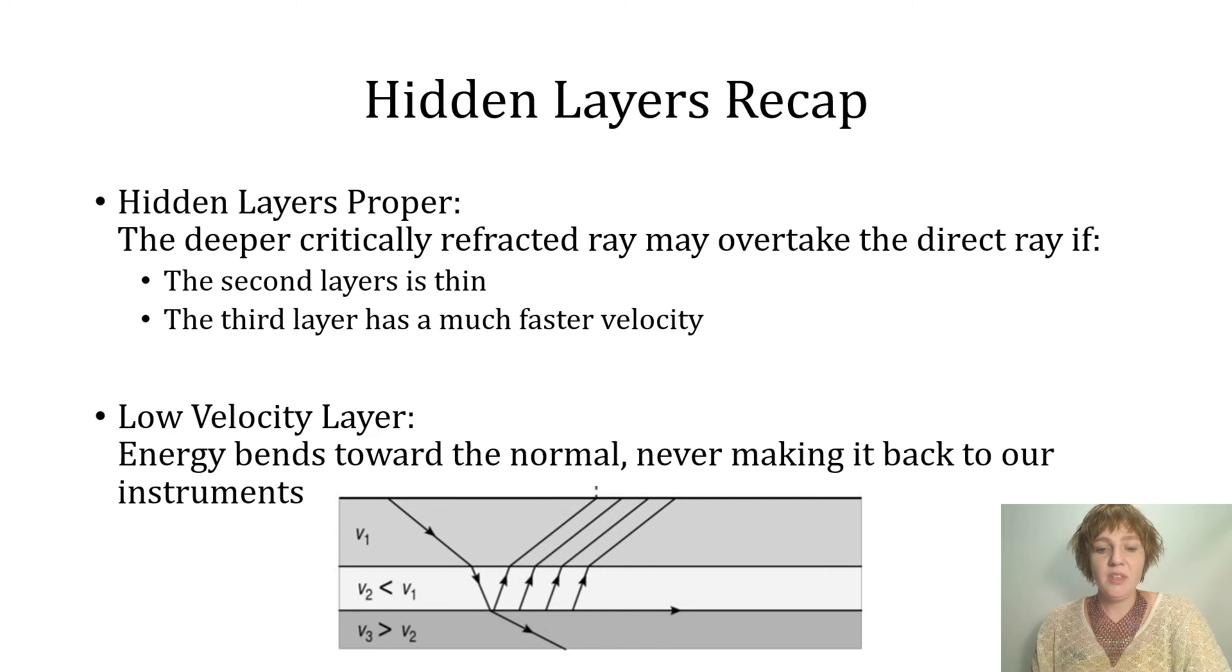The other type of hidden layer is the low velocity layer. In this case, because energy is bending down towards the earth, we have no critically refracted rays representing the velocity of one of our layers, and so that just stops us from being able to detect the layer.